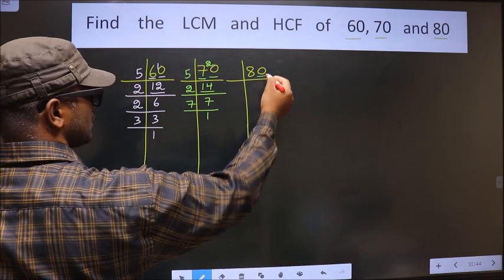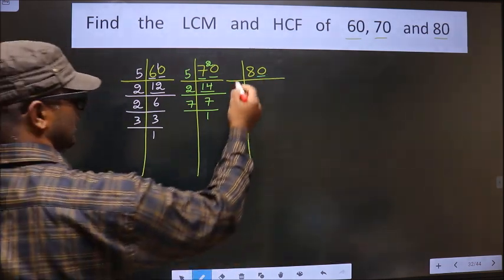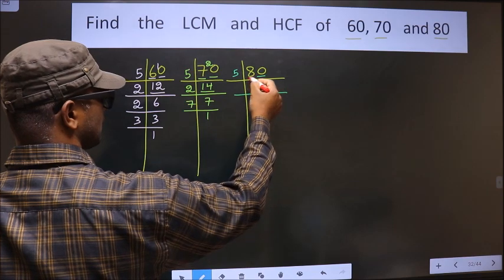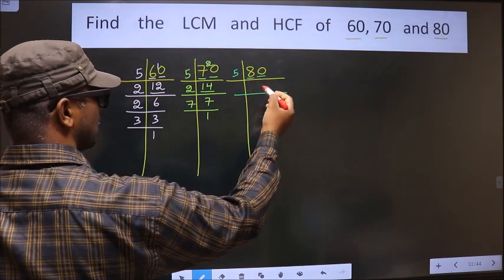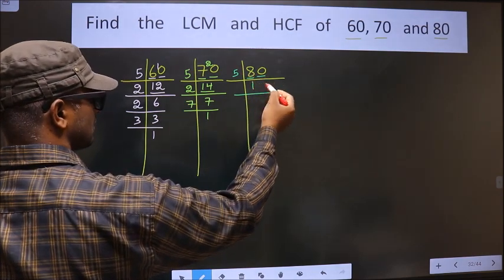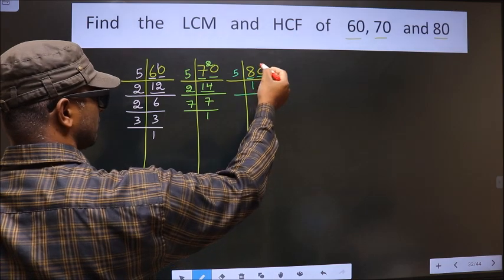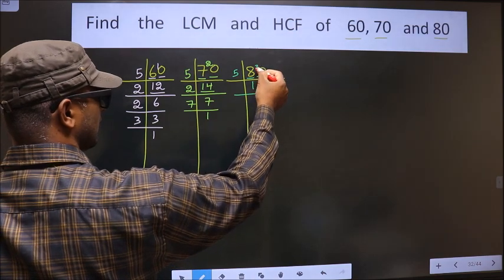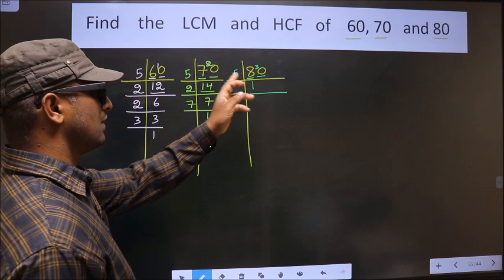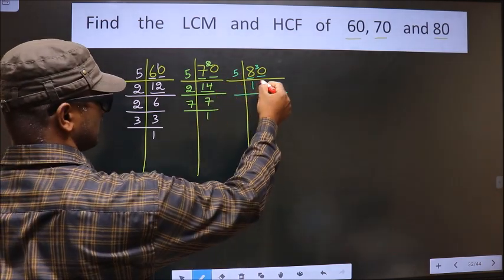For 80, the last digit is 0, so we take 5 here. The first number is 8. A number close to 8 in the 5 times table is 5 once 5. 8 minus 5 is 3, carried forward making it 30. When do we get 30 in the 5 table? 5 sixes are 30.